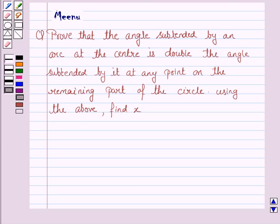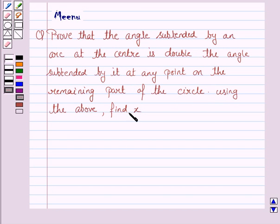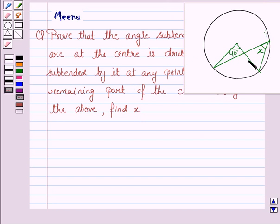Hello and welcome to the session. Let's work out the following problem. It says: prove that the angle subtended by an arc at the center is double the angle subtended by it at any point on the remaining part of the circle. Using the above, find the value of x in this figure.